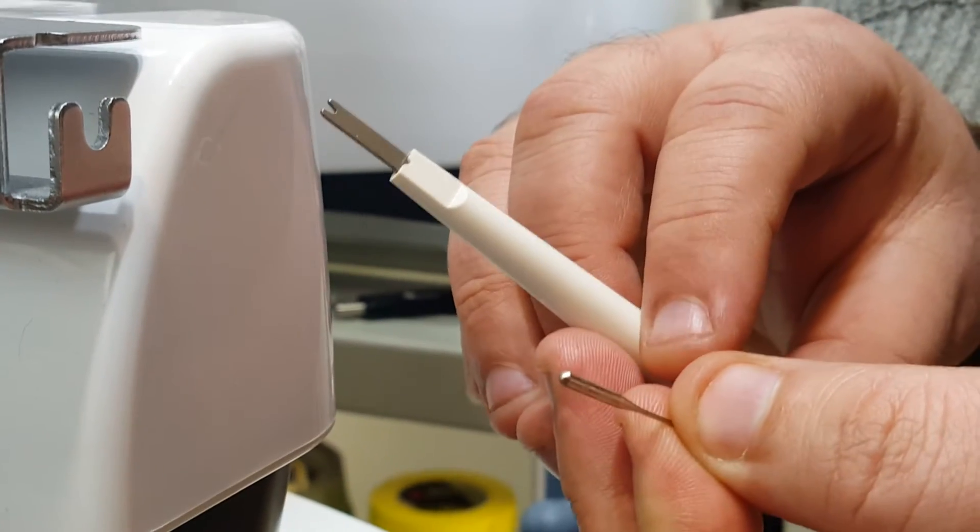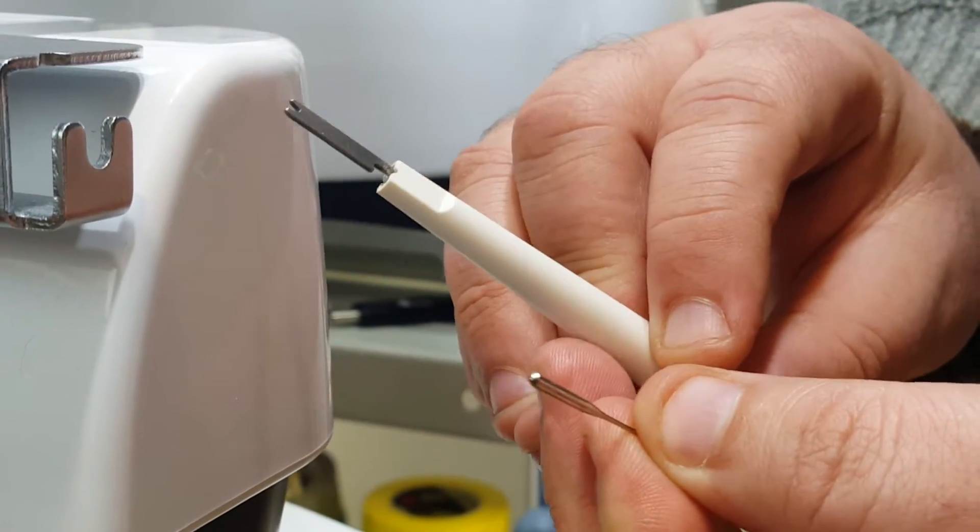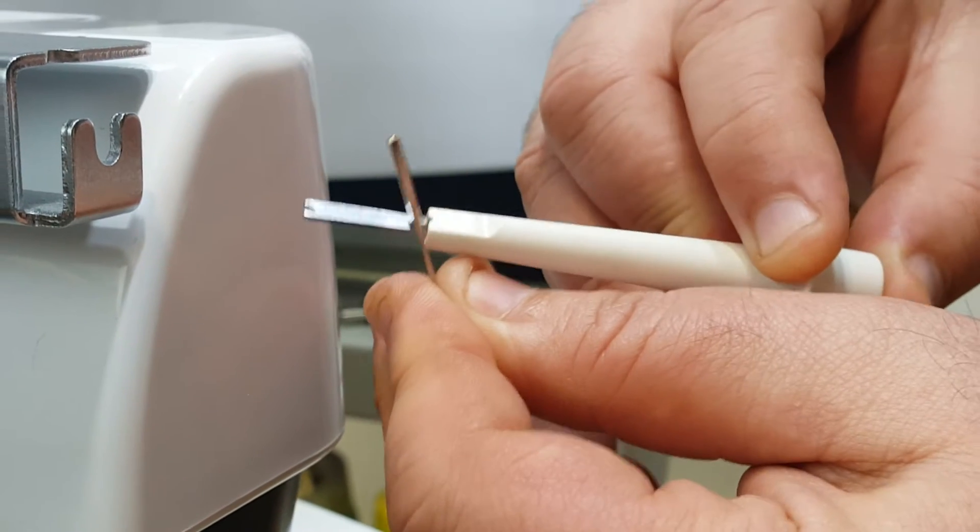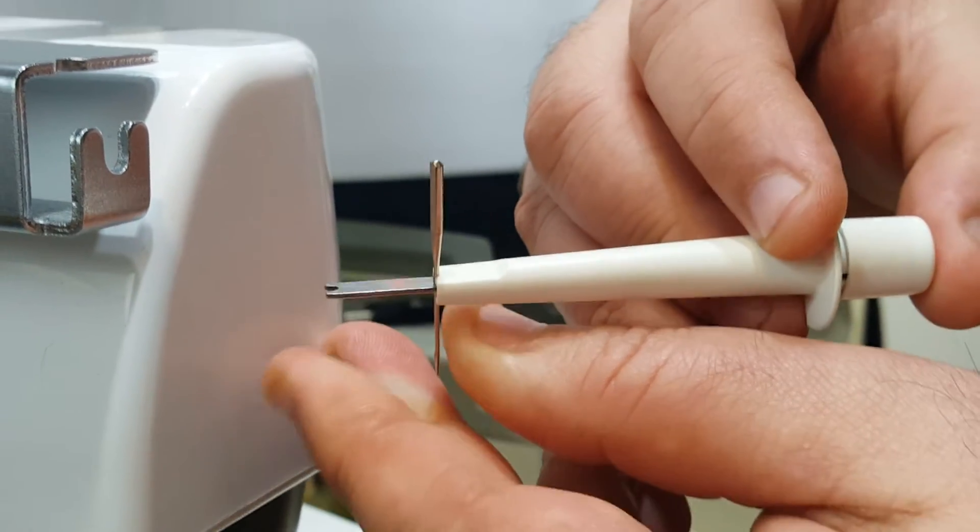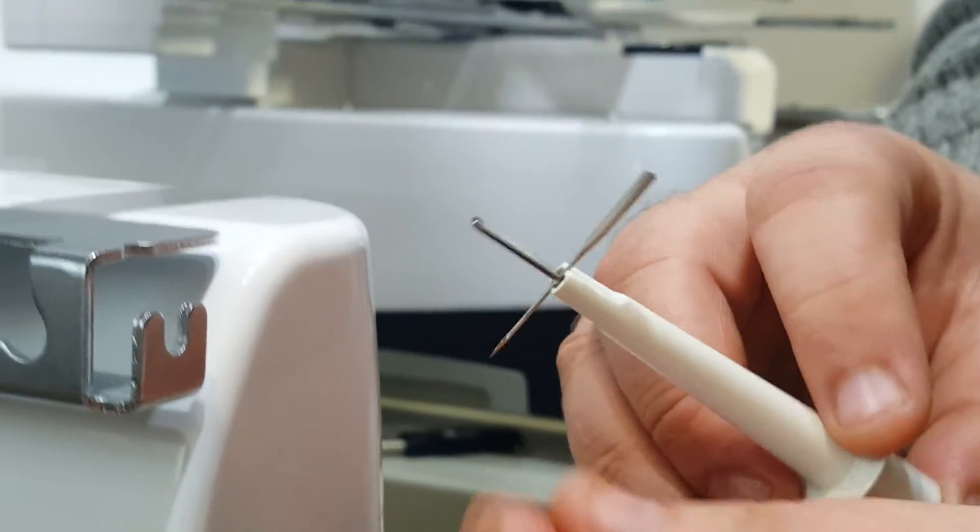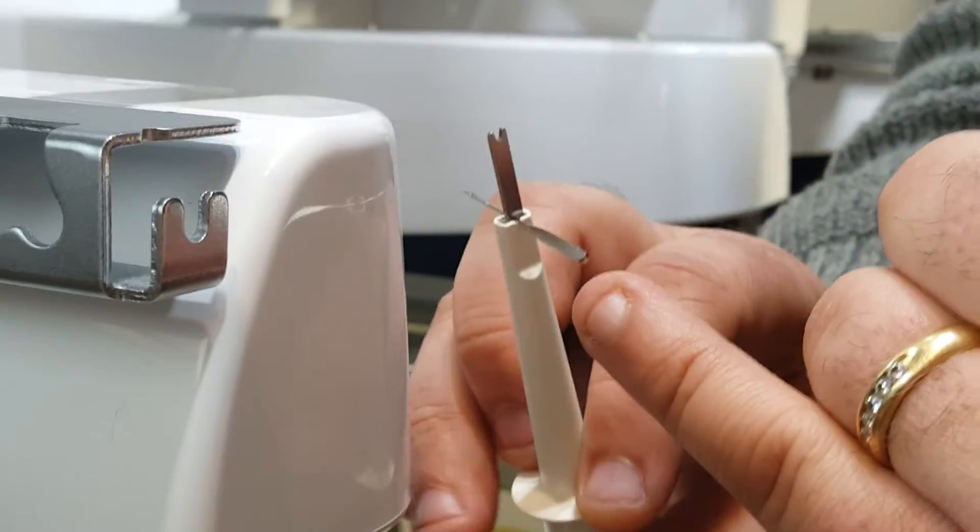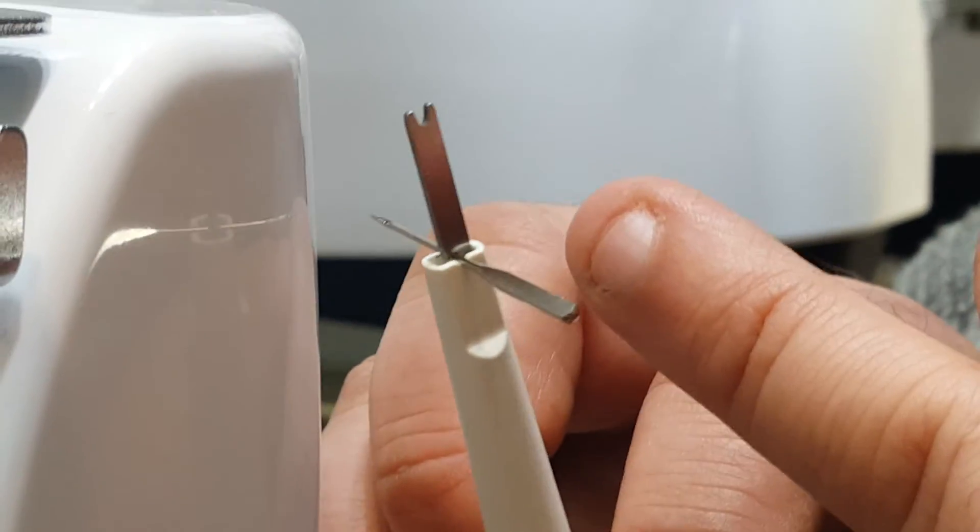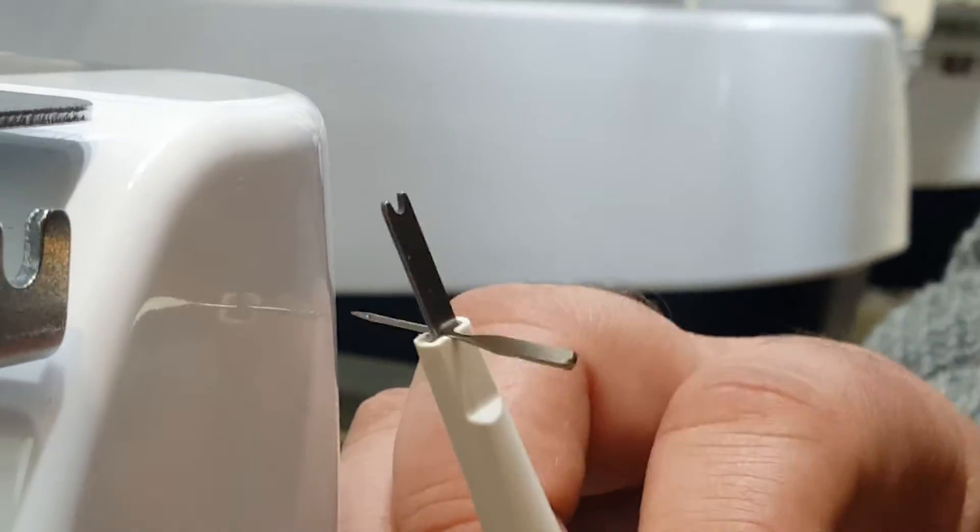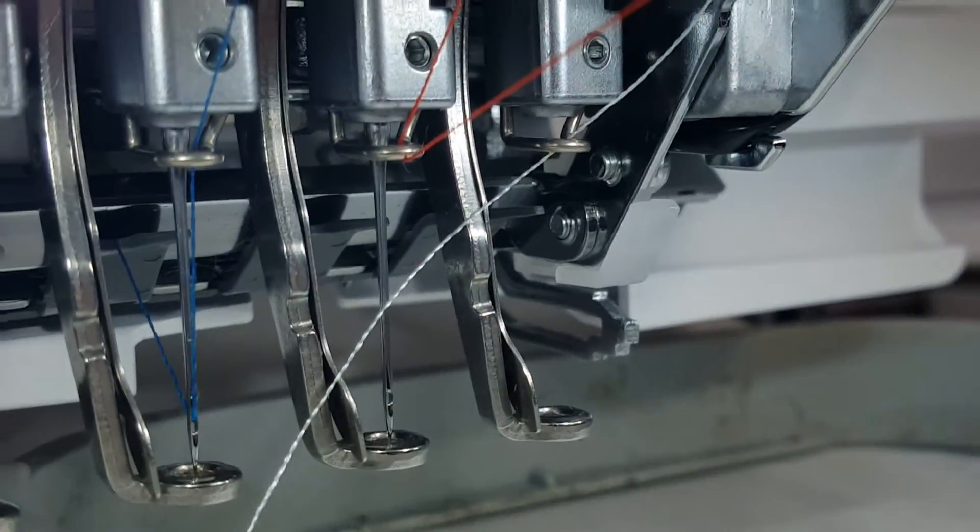So again, we're going to take our tool, we're going to press up on it to open that little notch open. I'm going to grab my needle, place it in there, let go of it. We're going to want the backside of the needle, the top of it is flat, that's going to go in to the back.